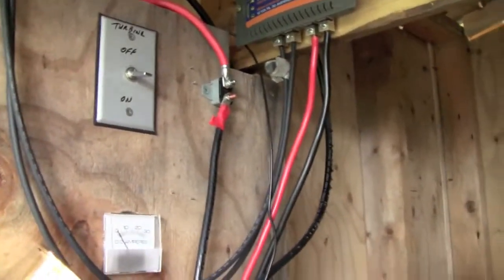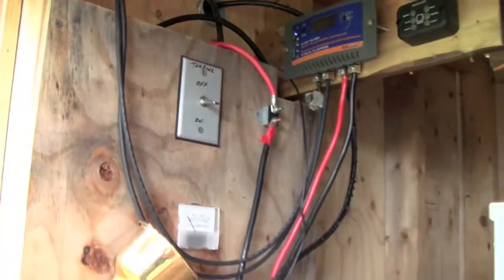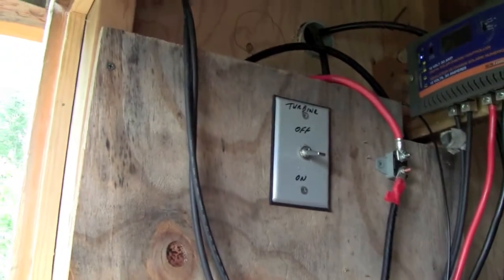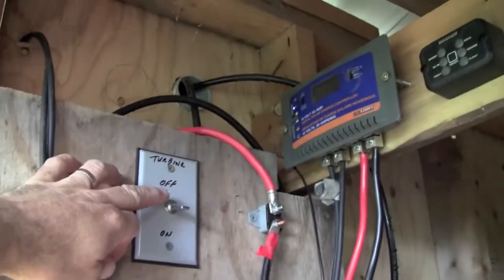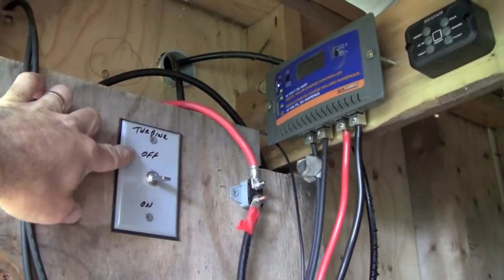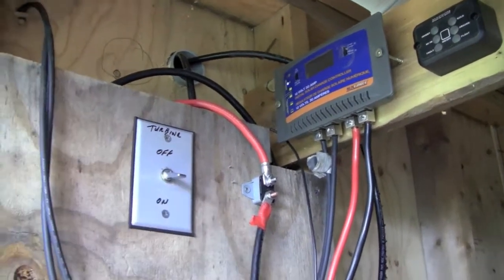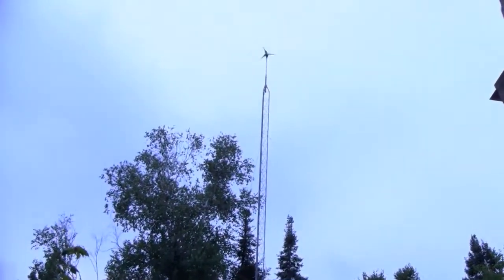On this side here we have solar and turbine wind generator power coming in. There's the switch. The switch is in the on position. If you flip it to the off position it will short the turbine and the turbine will stop turning and stop producing power.